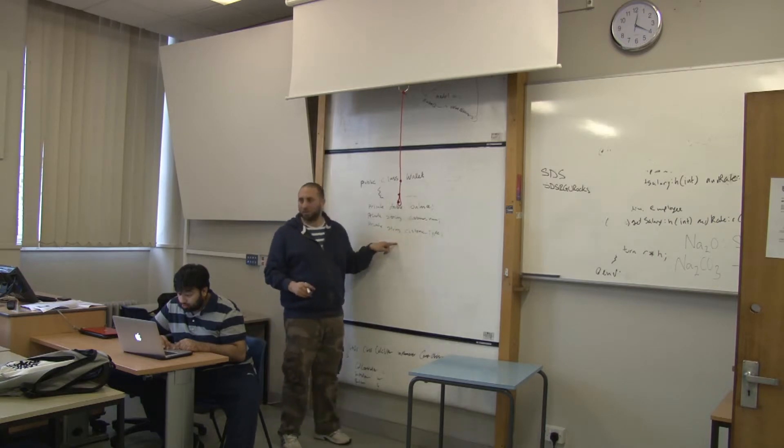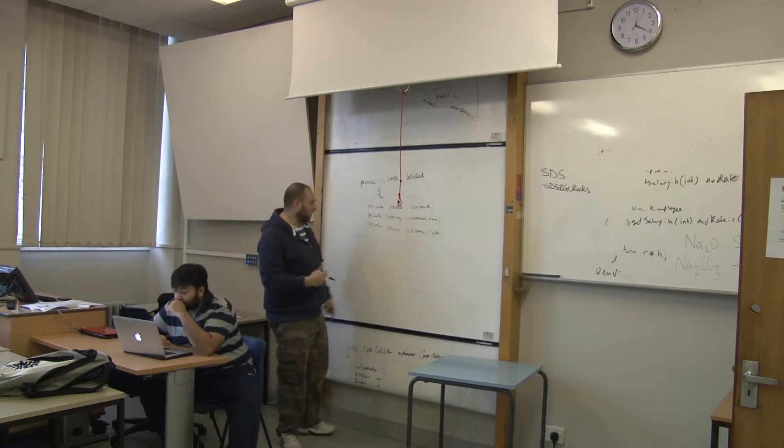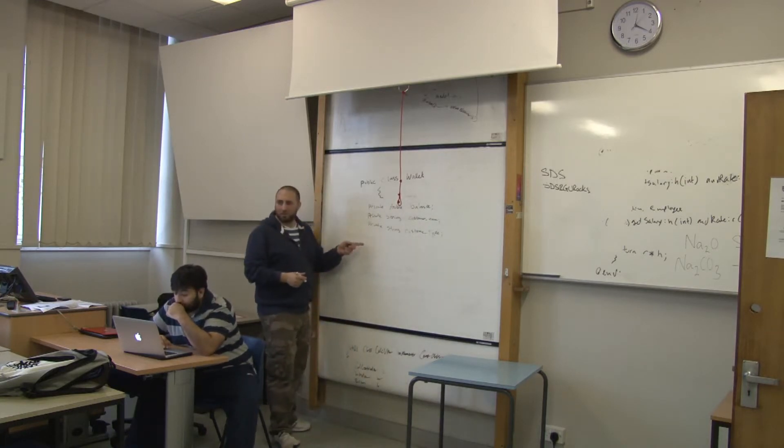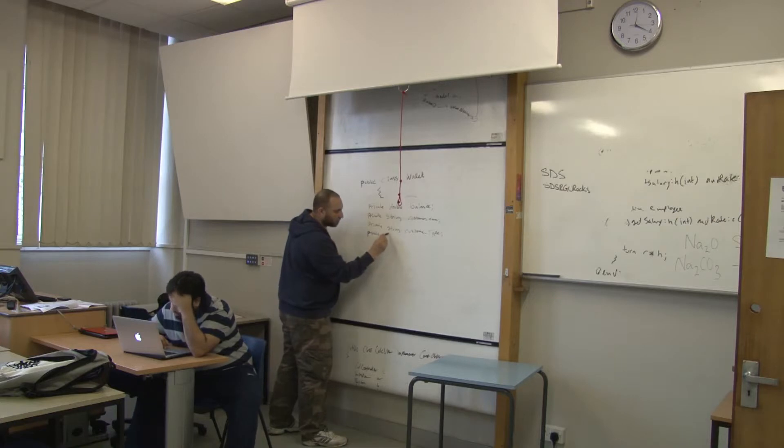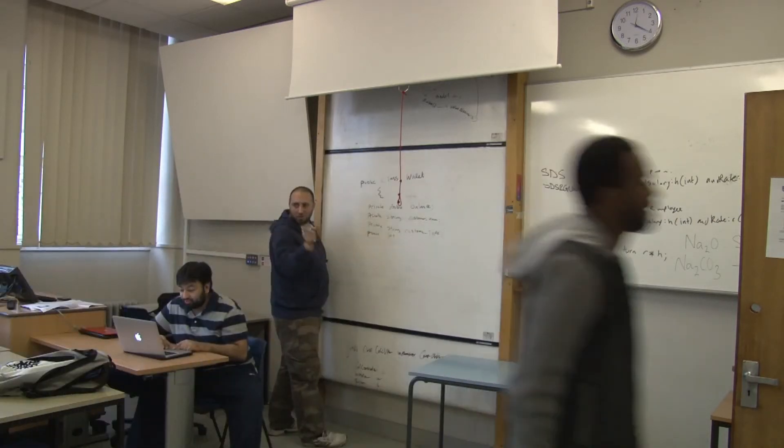Customer type. So the customer type is going to go into string. Student, student, student, non-student. In here. Anything else that we need? Discount. Maybe. The discount level. So let's say private integer.